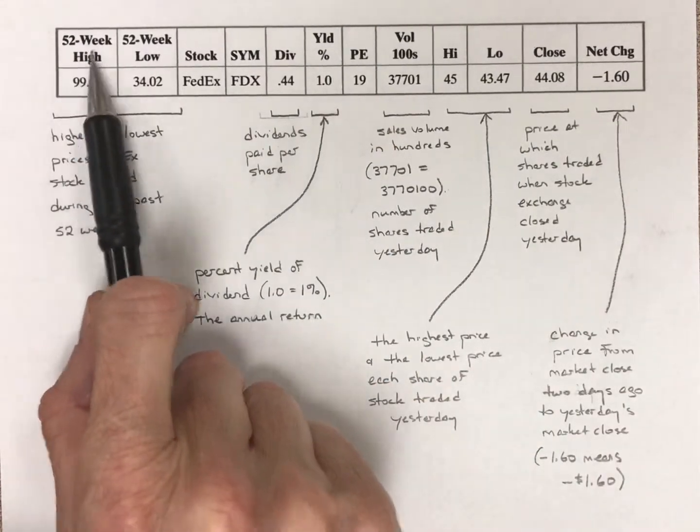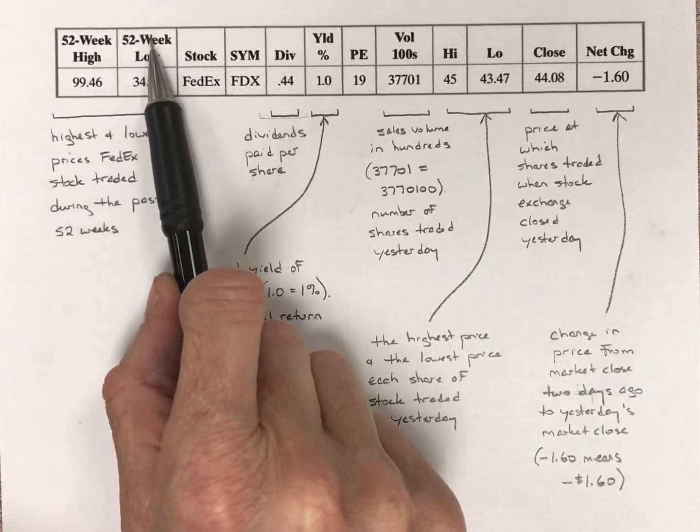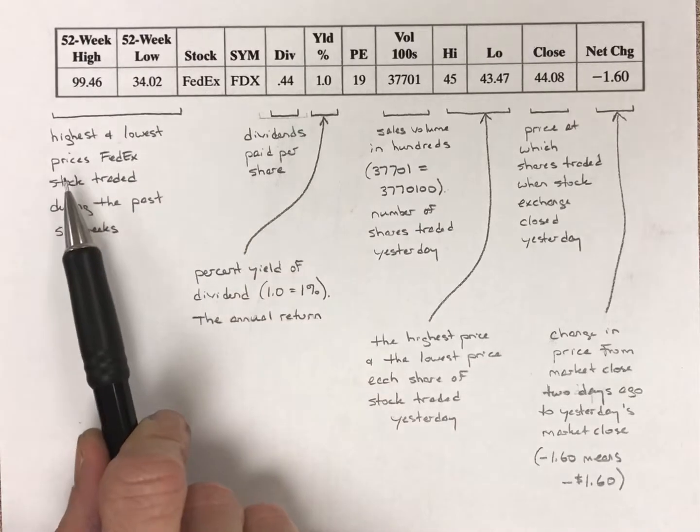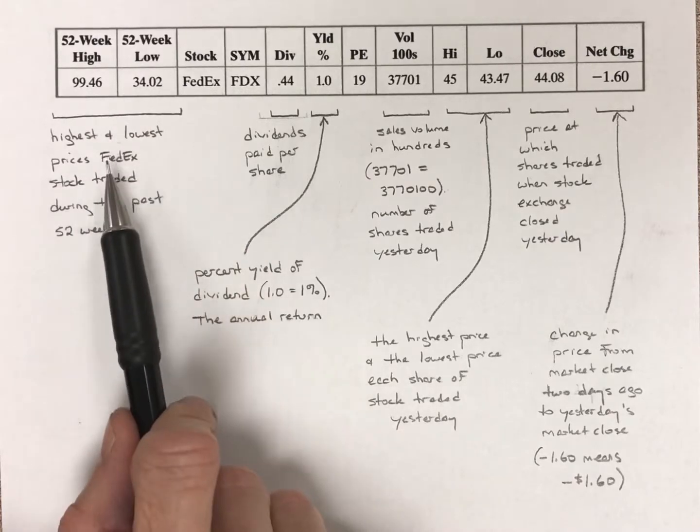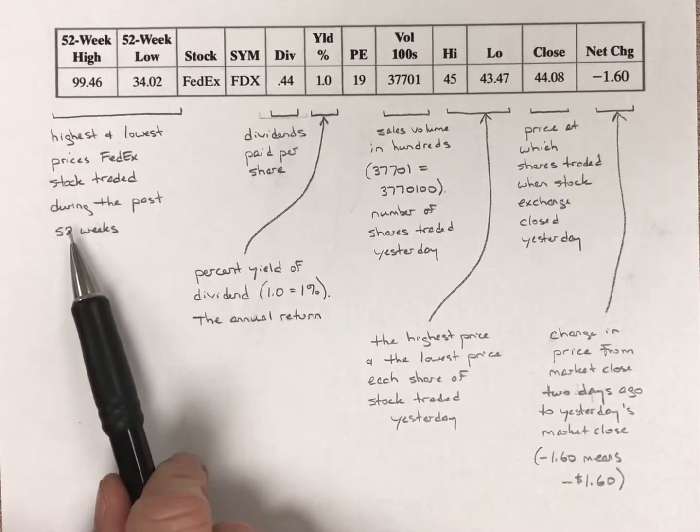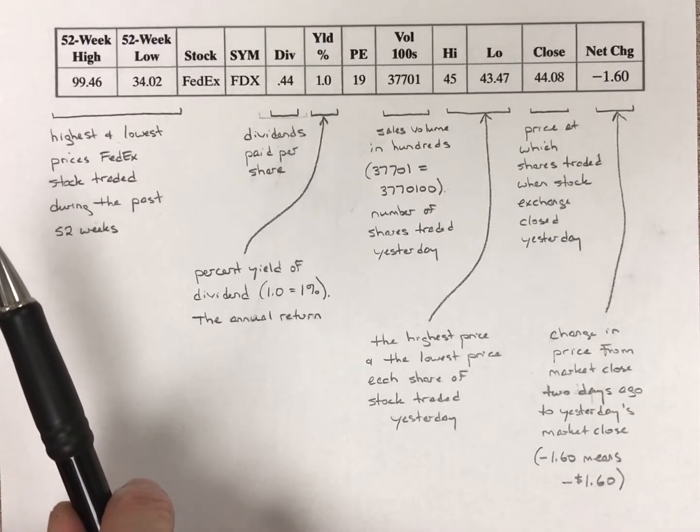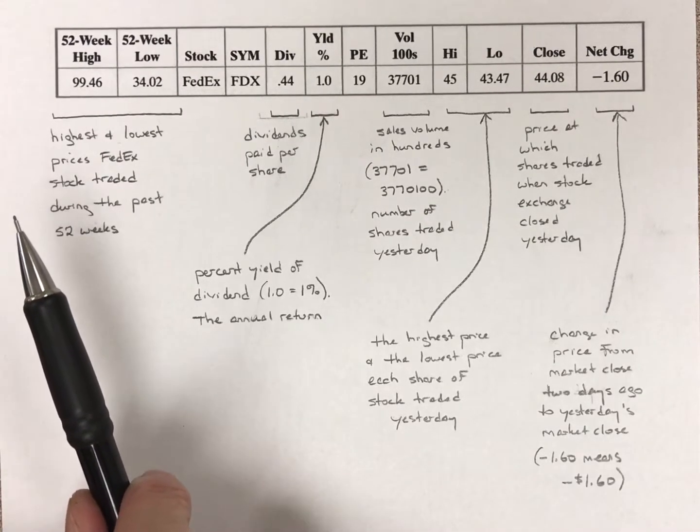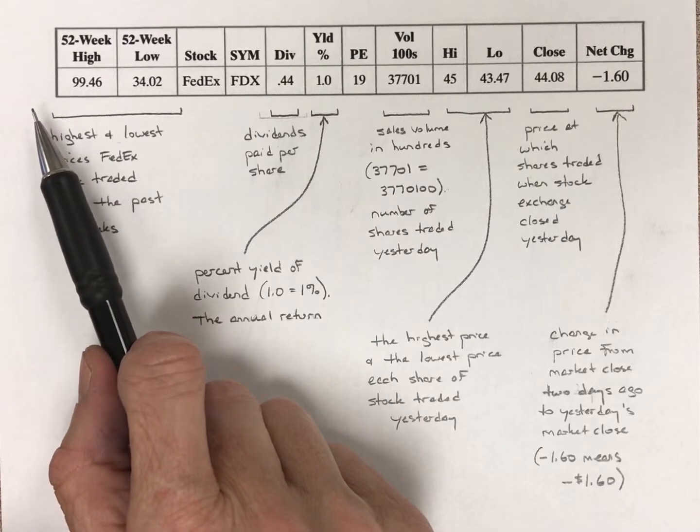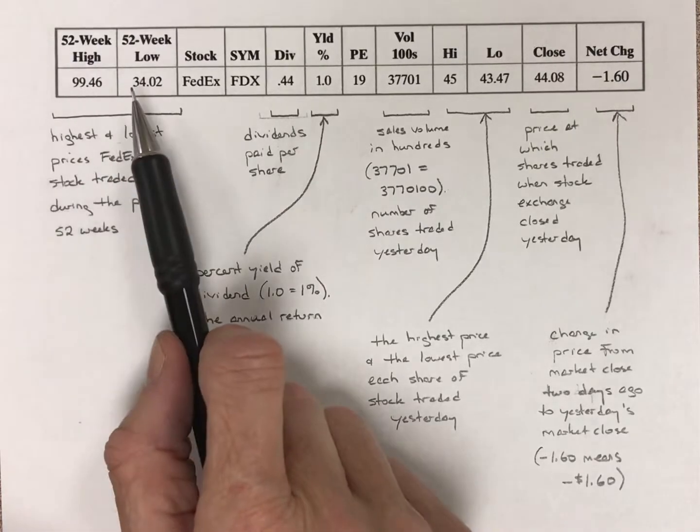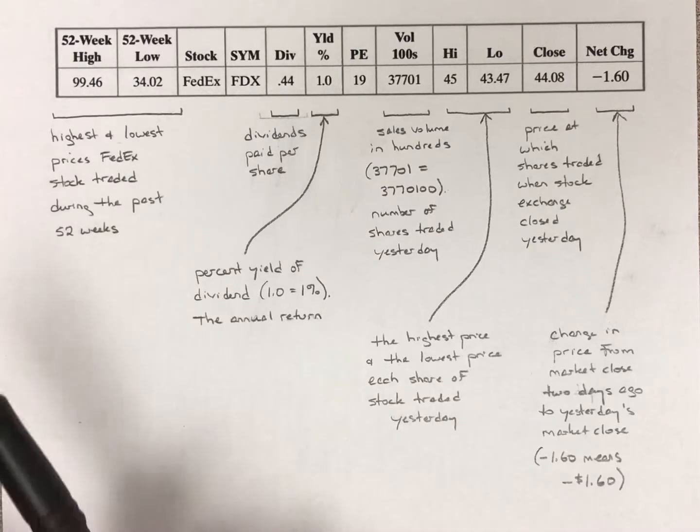Okay, so what do you get? First off, on the left here, you get a 52-week high price, a 52-week low price. And what this tells you is these are the highest and the lowest prices, they're in dollars, in which FedEx stock was traded during the past 52 weeks, during the past year. So if today is just February 23rd, from February 23rd of last year to February 22nd of this year, this is the highest and lowest prices that it was traded during that one year.